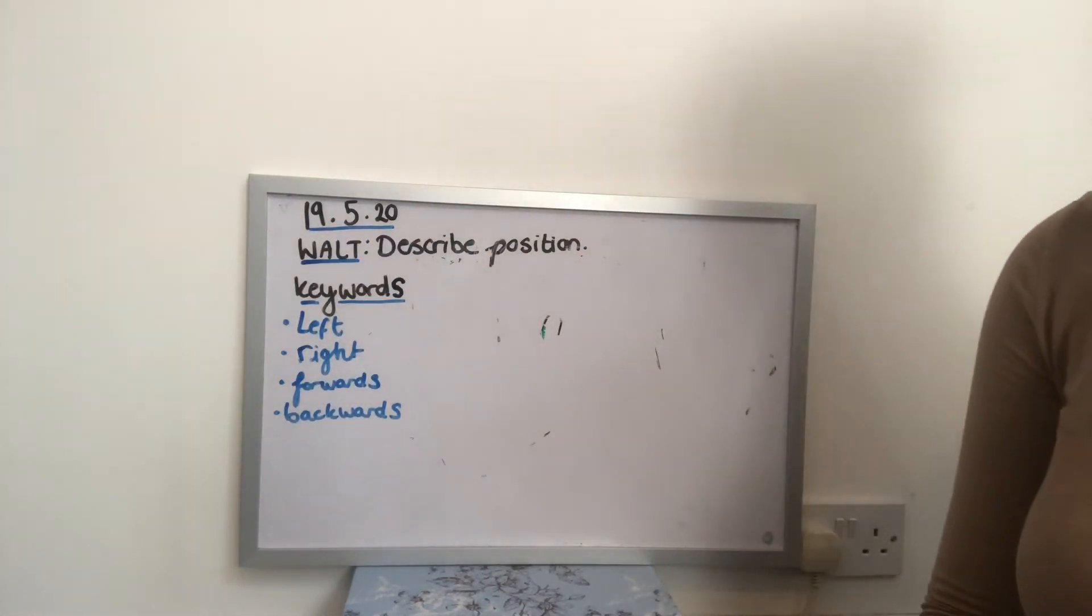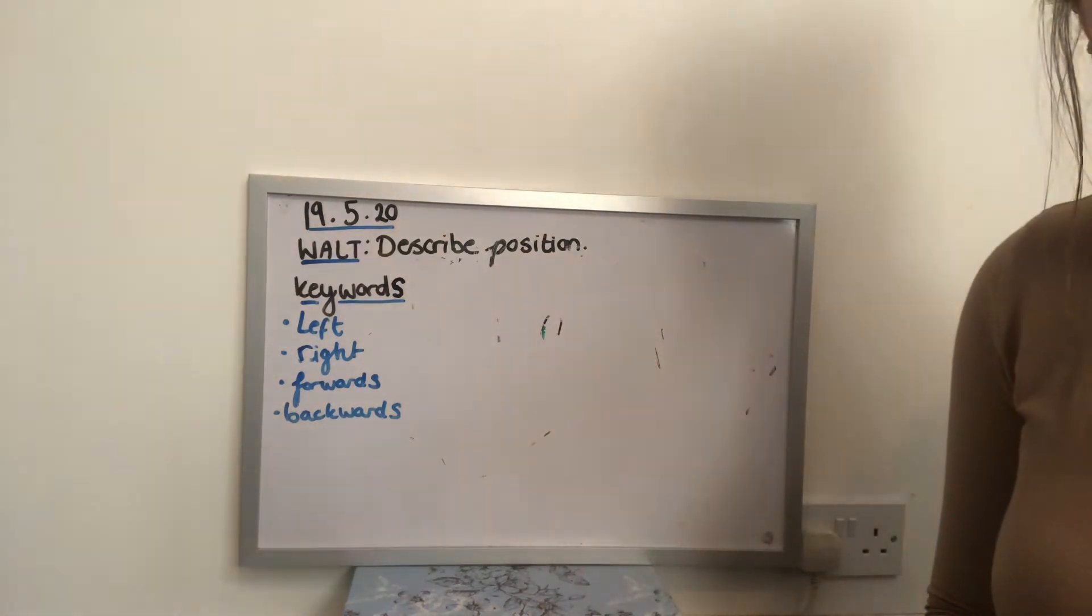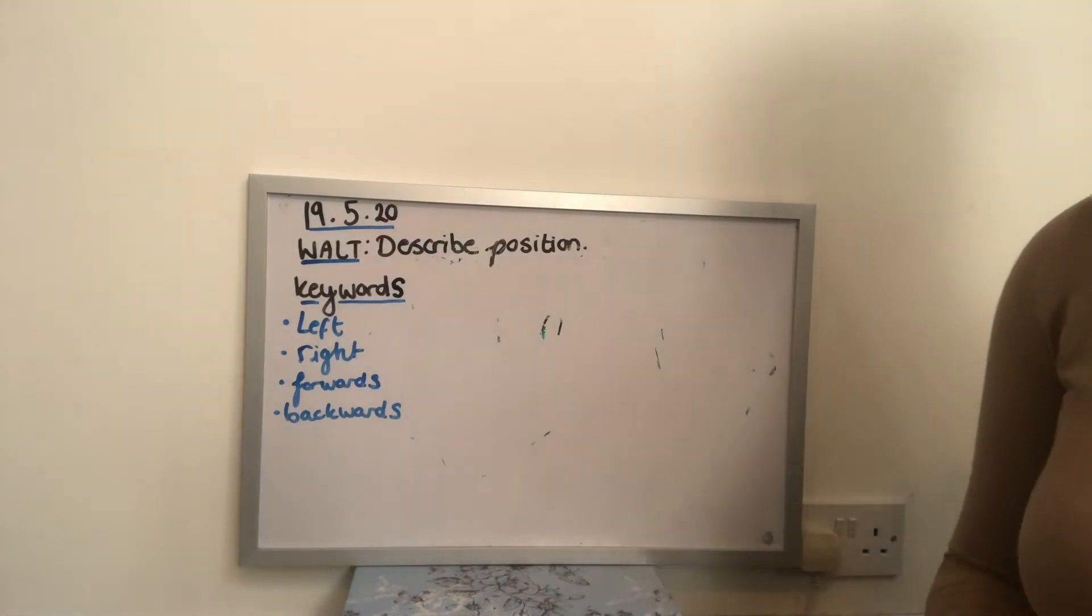So have a little go with that. Pause the video. Stand up and walk forwards. And then you can walk backwards. You might want to put some lefts and rights in there. So walk forward five steps maybe. Turn left. Walk backwards. Turn right. And just have a little practice with that to start off with.